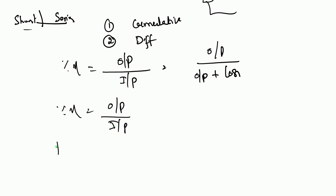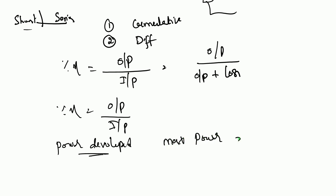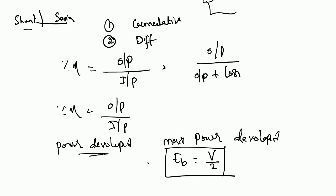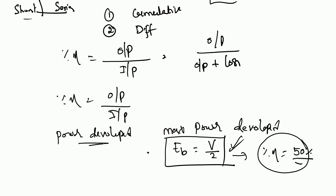The motor has a very important condition: the maximum power developed condition. Maximum power developed means back EMF E_b is equal to V by 2, that is, E_b equals half the supply voltage. At this maximum power developed condition, the efficiency is 50%. Note that maximum power developed condition is not the same as maximum efficiency condition.